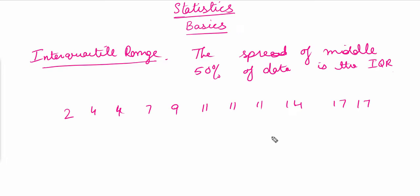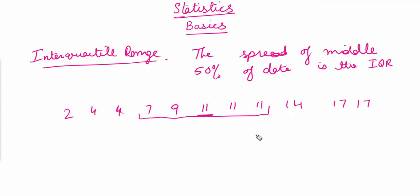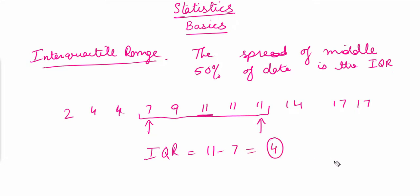In this data we have 11 digits, and the middle number is the 6th value. We take the 50% spread from the middle — approximately these numbers represent the middle 50% of the data. The interquartile range comes from this middle 50%: the biggest number is 11 and the smallest is 7. So the interquartile range equals 11 minus 7, which equals 4.